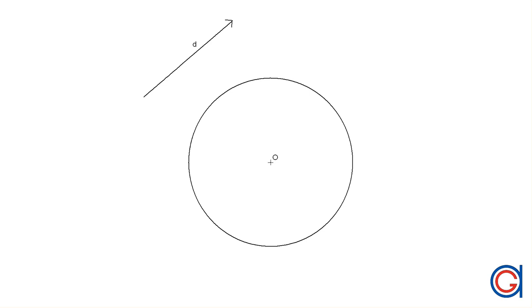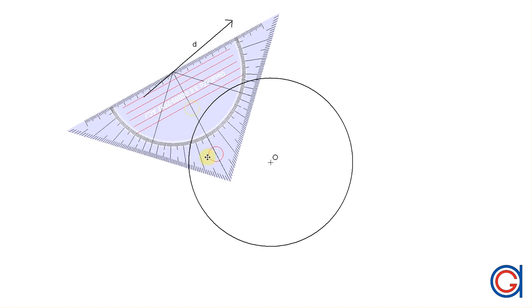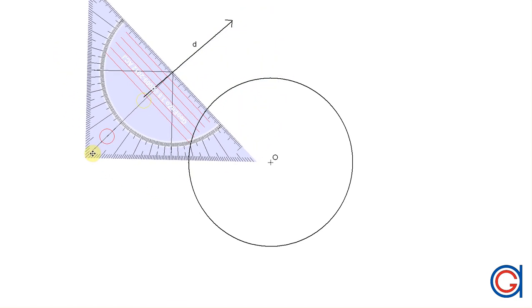So, the first step is to draw a perpendicular line from the direction vector d, passing through the origin o of the given circle.